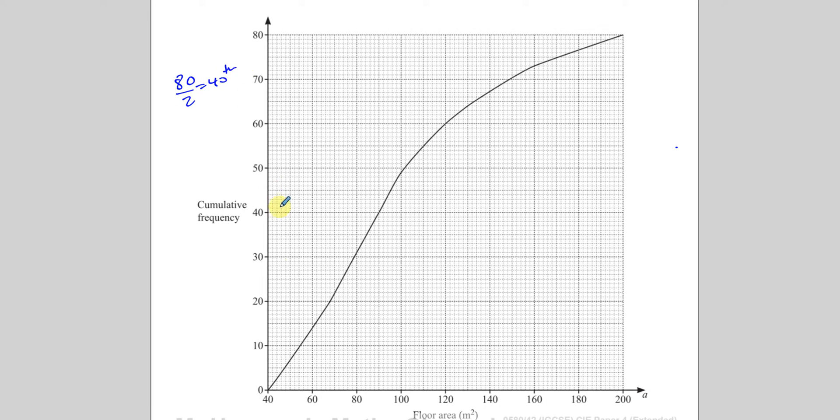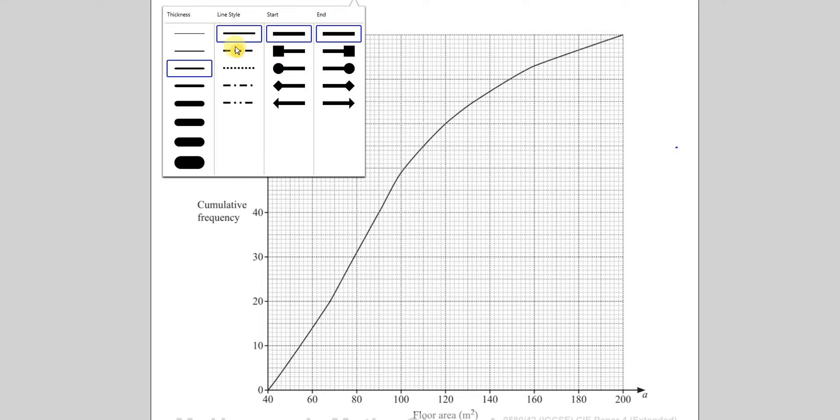Normally if it was discrete data with an even number of entries, there are two middle entries, so we look at the average of the middle two, but here we are estimating. When you have a cumulative frequency curve, you just basically take the highest number, divide it by 2, and that tells you the position of the middle value. So the position of the middle term is the 40th position. That doesn't tell us what it is. It tells us where it is.